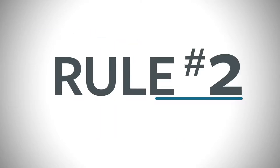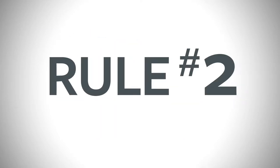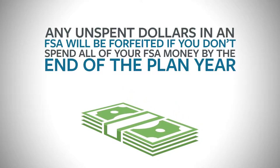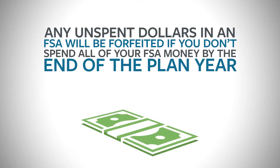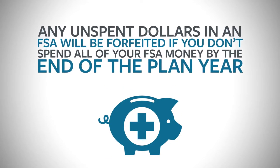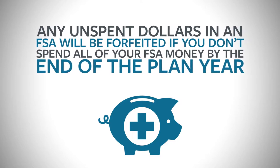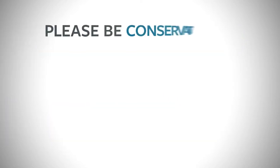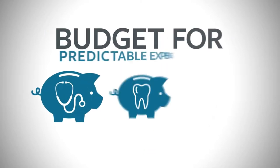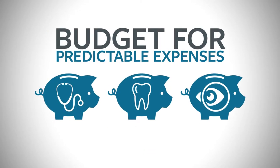Rule number two — and this is the big one. There is an IRS rule that says any unspent dollars in an FSA will be forfeited if you don't spend all of your FSA money by the end of the plan year. So please be conservative when estimating the amount of money you wish to set aside in your account and budget for predictable expenses.